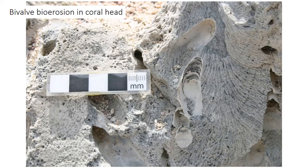Bioerosion is performed by many types of organisms, including bivalves — whose borings appear as cylindrical smooth features — but also by sponges, sea urchins, parrotfish, and many other types of organisms.